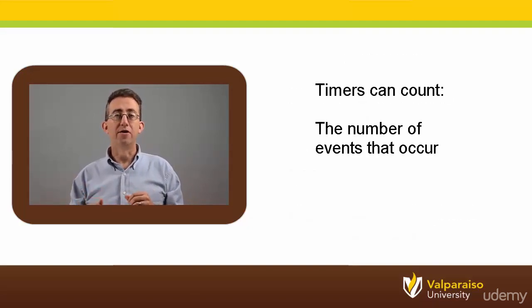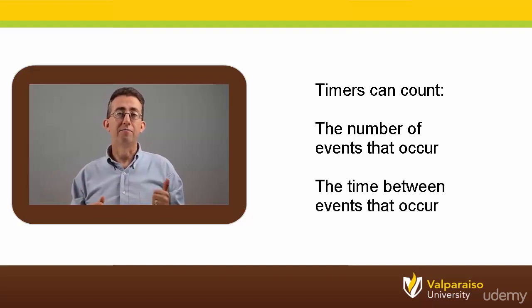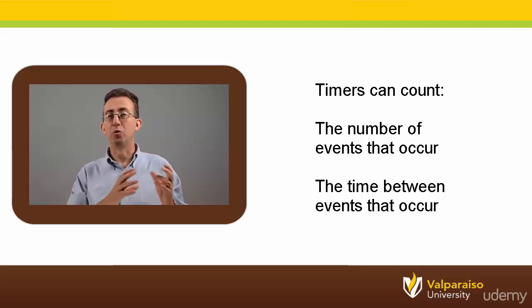First, they can count the number of events that occur, or second, they can count the passing of time between events. Let's take a look at an example of a timer being used to count the number of events, and then we will look at an example of counting time between events.